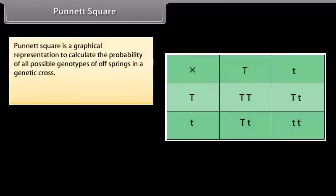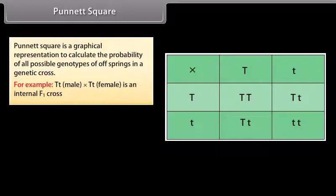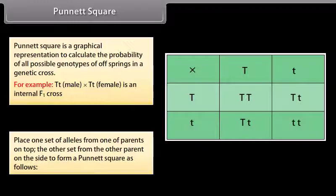Punnett square. Punnett square is a graphical representation to calculate the probability of all possible genotypes of offspring in a genetic cross. For example, T.T. male cross with T.T. female is an F1 cross. Place one set of alleles from one parent on top, the other set from the other parent on the side, to form a Punnett square as follows.